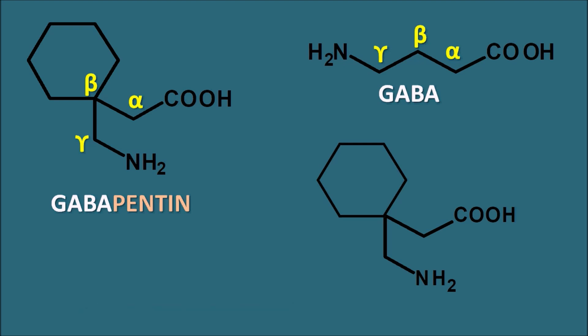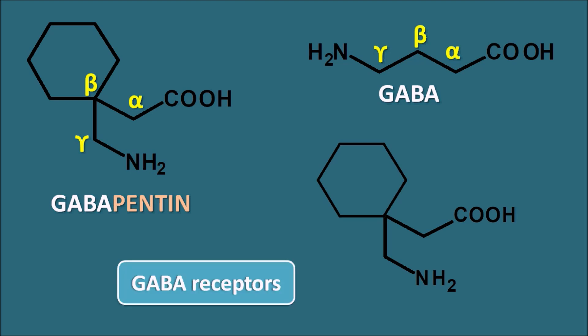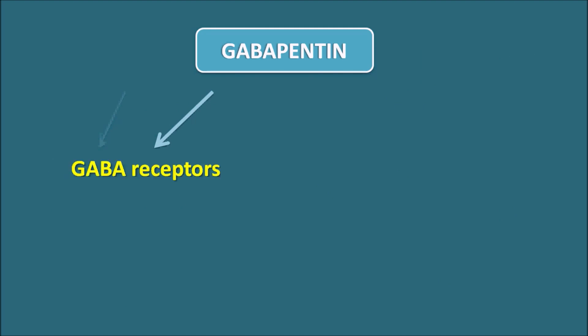Now what is the action of Gabapentin? Whether it acts on the GABA receptors or not? Gabapentin is a structural analog of GABA, so we might expect it acts on the GABA receptor. But it was practically observed that Gabapentin has no affinity for GABA receptors. GABA receptors are of two types — GABA-A and GABA-B — and it was found that Gabapentin has no affinity towards either GABA-A or GABA-B receptors.